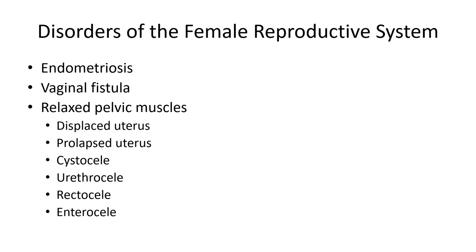Endometrial tissue responds to normal ovarian stimulation (involving LH and FSH). This tissue bleeds each month and forms an endometrial crust that becomes an endometrial cyst. This cyst can rupture, producing even more endometrial tissue.